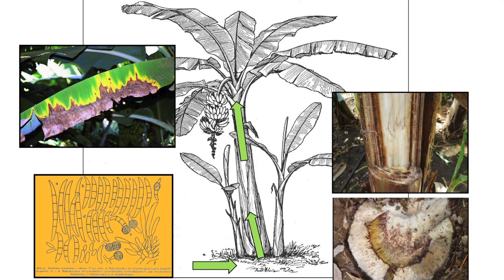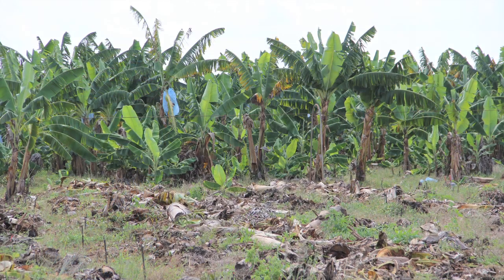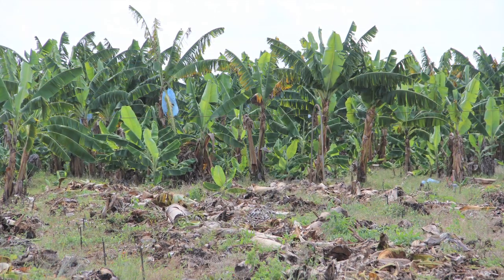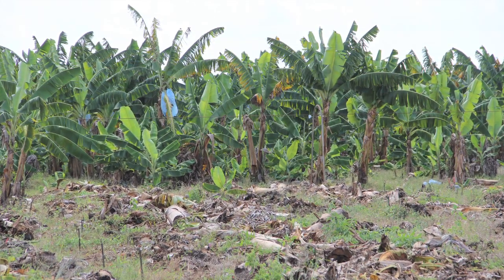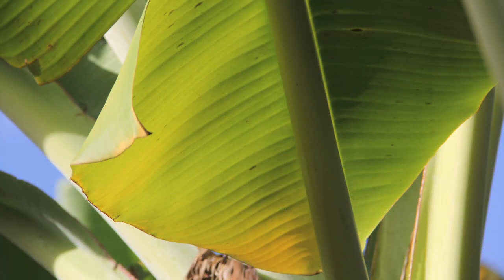It's a problem because the fungus can survive in the soil for up to 40 years. It produces spores that are very tolerant, and it's hard to target also because it sits in the soil, so you cannot treat it directly with chemicals or biological products.